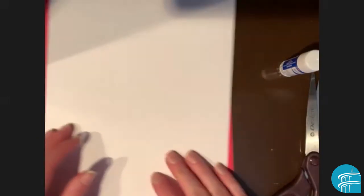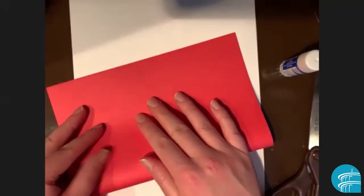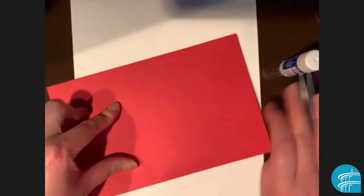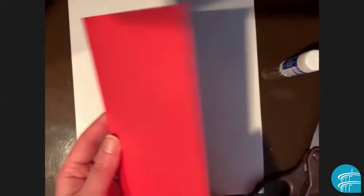I'm going to set that aside for now and we're going to work on making the card itself. I'm going to use my red paper as the outside of my card. So I'm going to just fold that in half, press that down to make a nice fold.